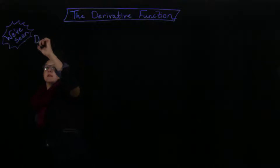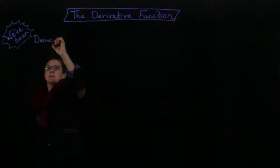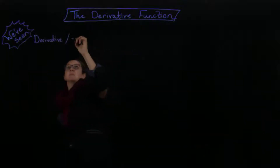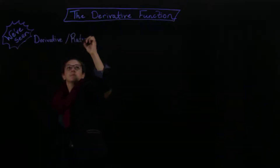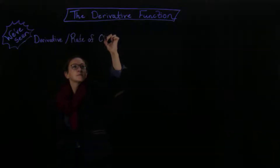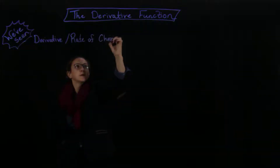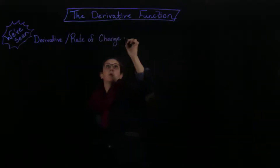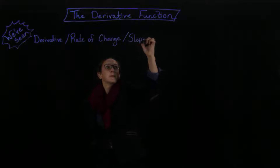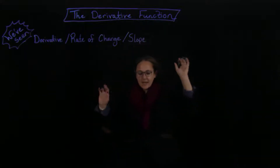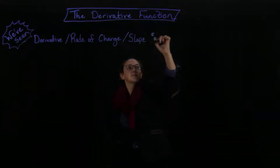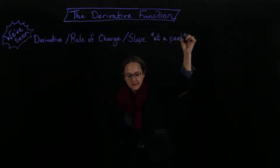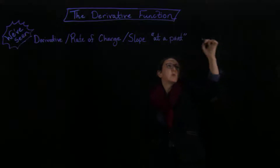So what have we already seen? We've seen the derivative, which is the same thing as the rate of change, which is the same thing as the slope. We've talked about all these things at a point — like x equals a or t equals a.